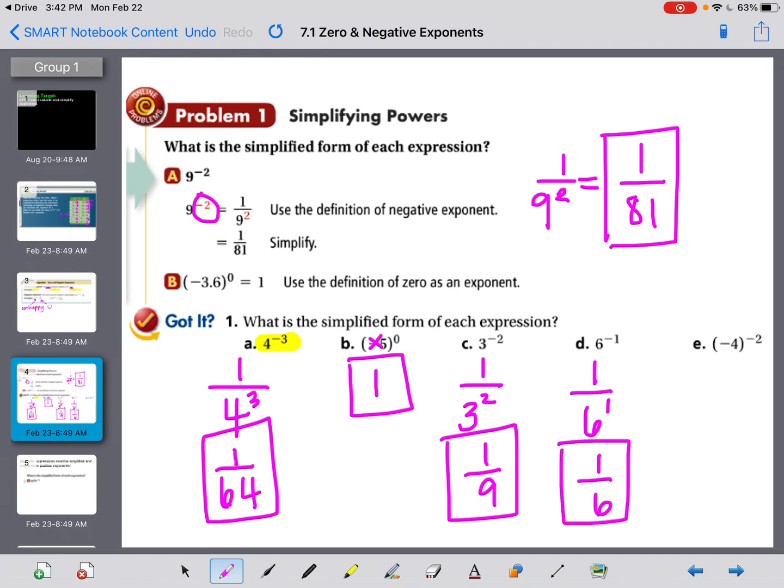And negative 4 to the negative 2nd power means I need 1 on top. The negative 4 doesn't change, but that negative 2 puts us on the bottom. And negative 4 to the 2nd power is actually a positive 16.